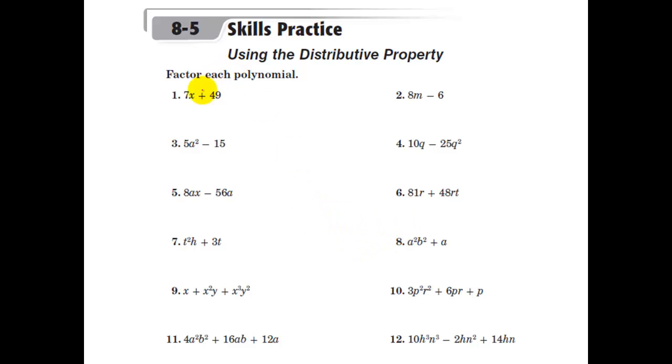First, we'll just do simple factoring. Very basic. So you look here, you say, what do they have in common? They both have a seven. So I take the seven out, leaving behind. If I take a seven out of here, I'm left behind with an X. If I take a seven out of here by division, I'm left behind with another seven. So if I were to distribute this back in, I can see that gives me the answer.